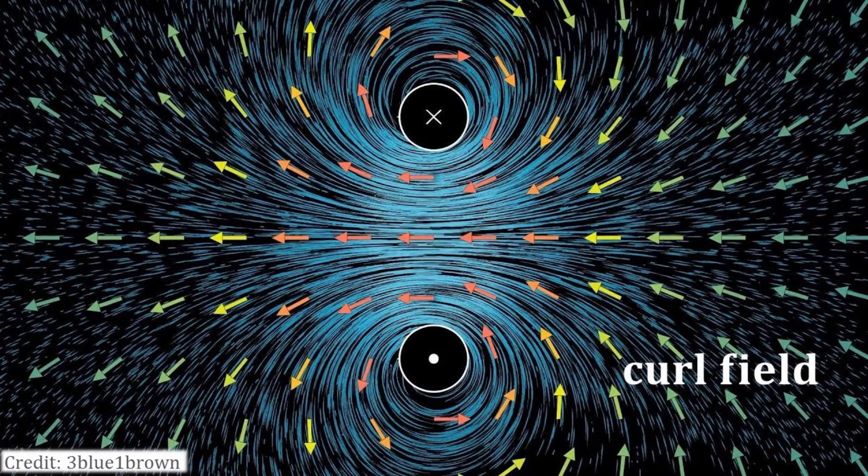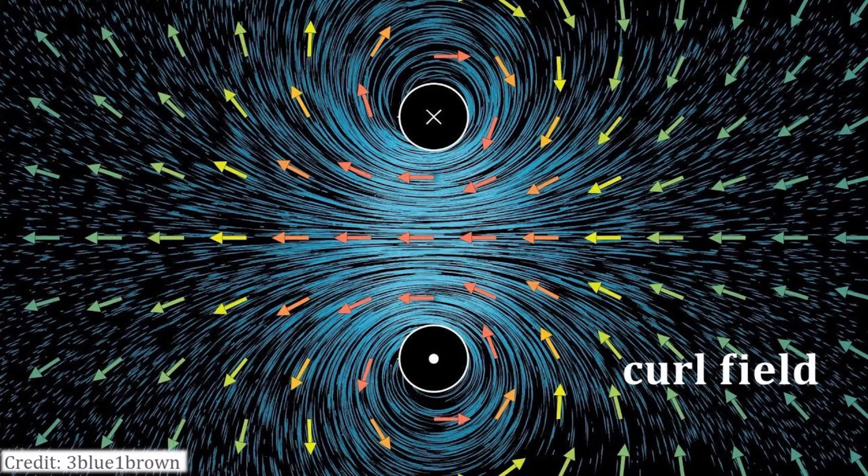Magnetic fields, here produced by two wires carrying currents in opposite direction, is another prime example of a vector field emanating from sources.